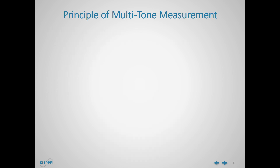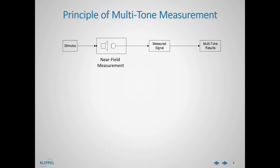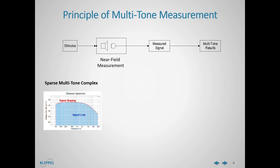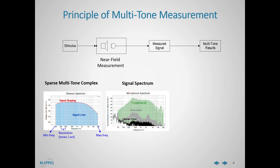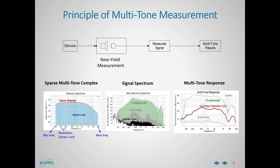How does a multi-tone measurement work? In this slide we can see the principle of a multi-tone measurement. First, the stimulus is defined. Since it is a sparse multi-tone complex signal, there are three basic parameters that have to be defined in addition to the signal shaping: the minimal frequency, the maximal frequency, and the frequency resolution — which means how many signal lines per octave will be placed. Once the stimulus is created, the measurement can be done by placing the microphone in the near field. From the measurement, we get the spectra of all the measured signals. These measured signals are primary data which require post-processing to get the multi-tone results.